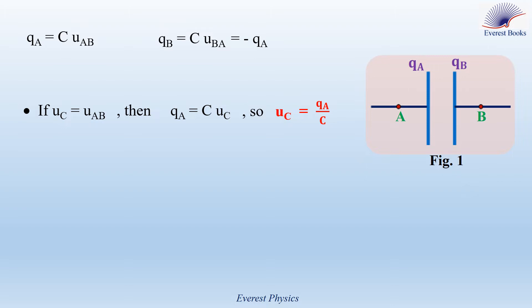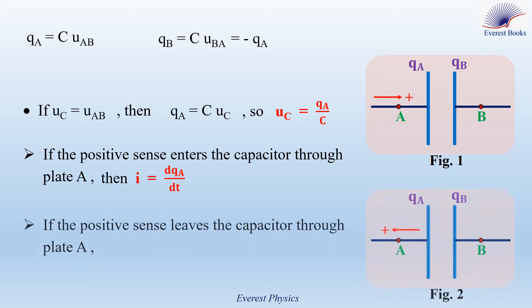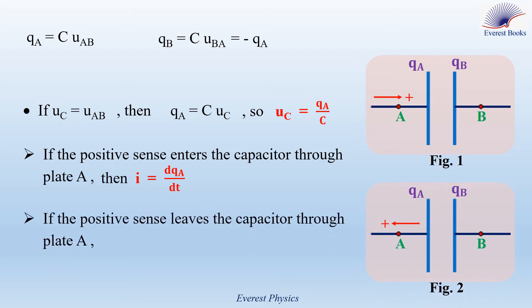Now let's determine the expression of the current in terms of the charge of each plate and time T. This expression depends on an arbitrarily chosen positive sense. If the positive sense enters the capacitor through plate A, as shown in figure 1, then I equals plus DQA by DT, the time derivative of the charge QA. If the positive sense leaves the capacitor through plate A, as shown in figure 2, then I equals minus the time derivative of QA.